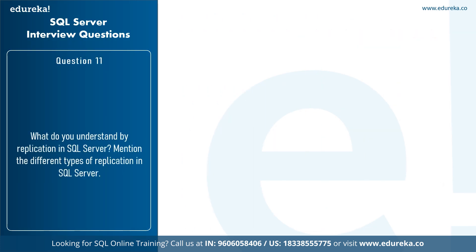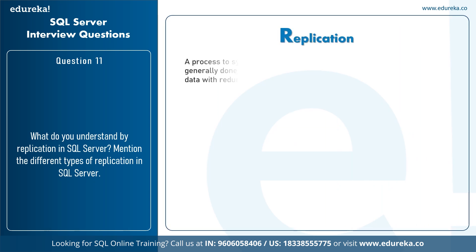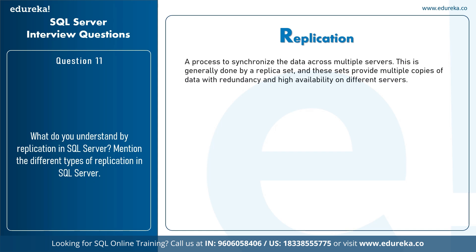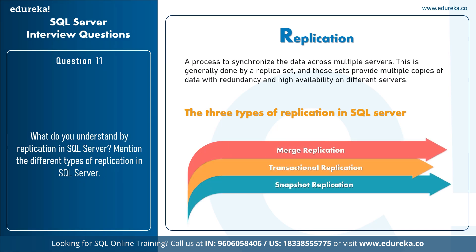The next question is: what do you understand by replication in SQL Server and what are the different types? Replication in Microsoft SQL Server is a process to synchronize data across multiple servers. Replica sets provide multiple copies of data with redundancy and high availability, and also provide a mechanism to recover from failures. The three types are: Merge Replication — groups data from various sources into a single centralized database, used in server-to-client scenarios; Transactional Replication — distributes data from publisher to subscriber, used in server-to-server environments; and Snapshot Replication — distributes data exactly as it appears at a specific moment, used for infrequently changing data.